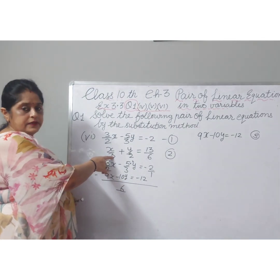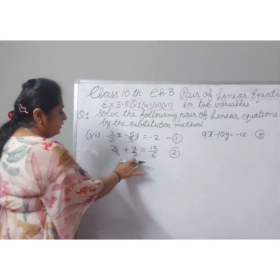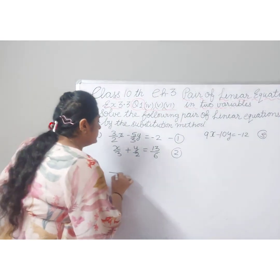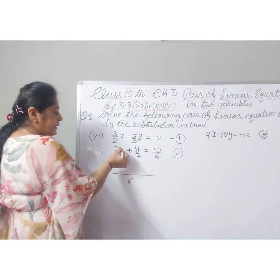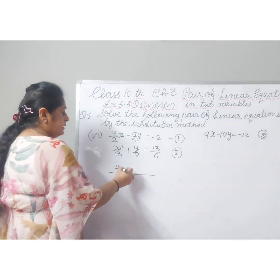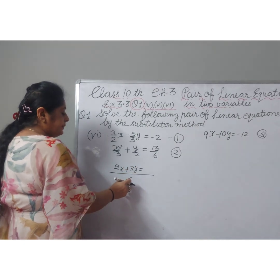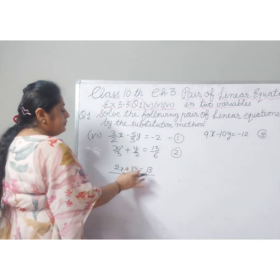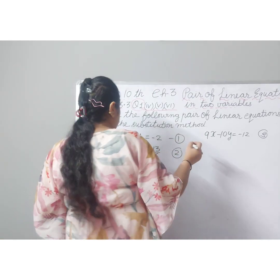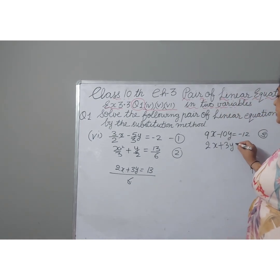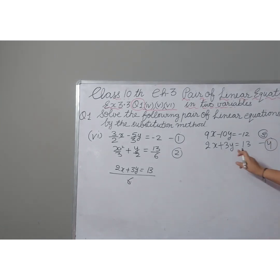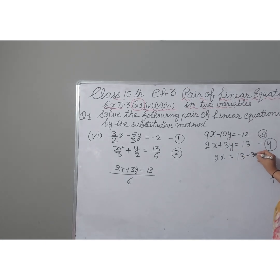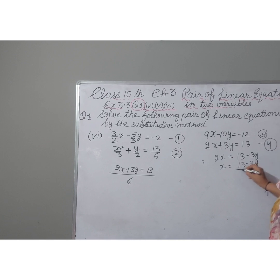Now we take LCM of equation 2 as 6. 6 divided by 3 is 2, so 2 times x gives 2x. 6 divided by 2 is 3, so 3 times y gives 3y. 6 divided by 6 is 1, and 1 times 13 gives 13. So equation 4 is: 2x plus 3y equal to 13. From equation 4, we isolate x: 2x equals 13 minus 3y, and dividing by 2 gives x equal to (13 minus 3y) divided by 2.